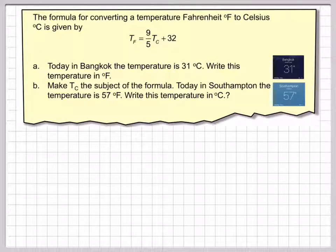When we're dealing with temperature, there are two versions we need to know: degrees Fahrenheit and degrees Celsius. Normally in metric countries you use degrees Celsius, but in the USA mainly they use degrees Fahrenheit. The formula for converting temperature Fahrenheit to Celsius is given by: Tf equals 9 divided by 5 times Tc plus 32.